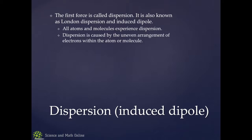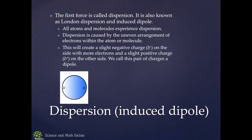Dispersion is caused by an uneven arrangement of electrons within a molecule. Think about it — if you are a carbon atom and you have six electrons, what is the likelihood that those six electrons are going to be perfectly arranged and absolutely perfectly separated from each other? Unlikely. Sometimes you may have four on one side and two on the other, or five on one side and one on the other.